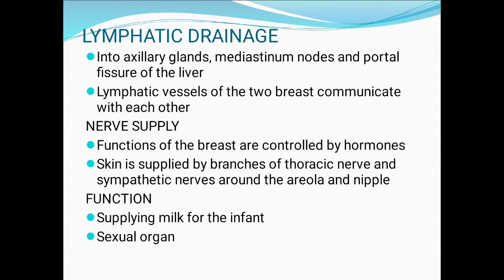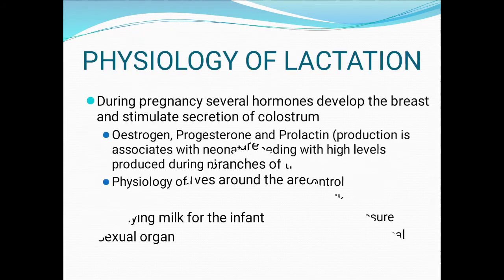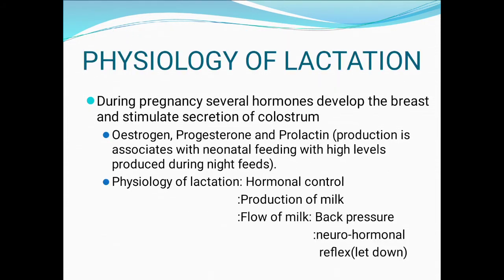Function: supplying milk for the infant and acting as a sexual organ. This explains the anatomy of the breast. Now we will see the physiology of lactation. During pregnancy, several hormones develop the breast and stimulate secretion of colostrum — estrogen, progesterone, and prolactin — with high levels produced especially during night feeds.